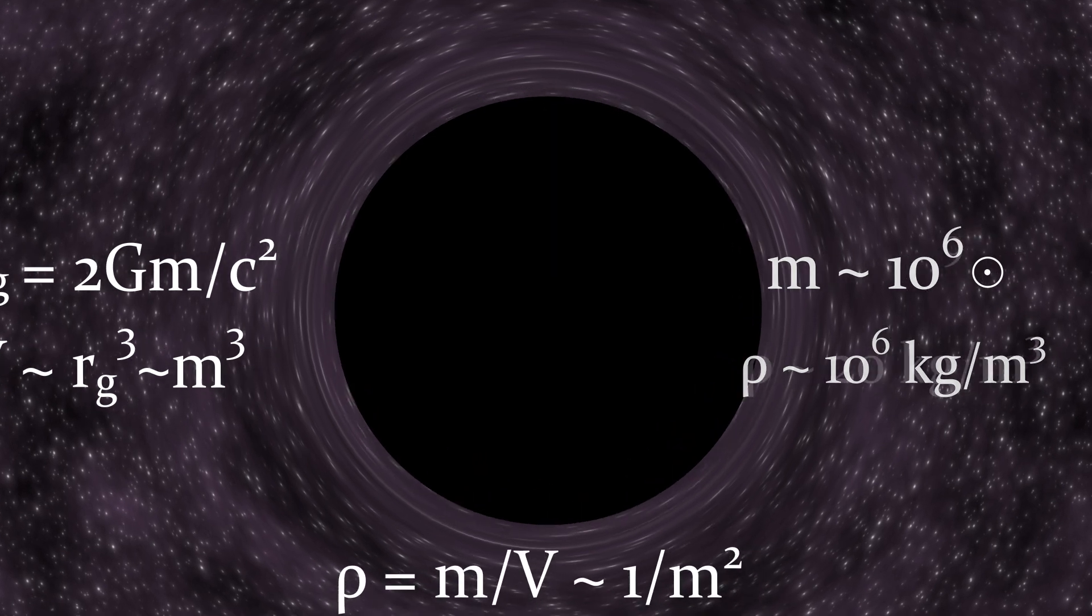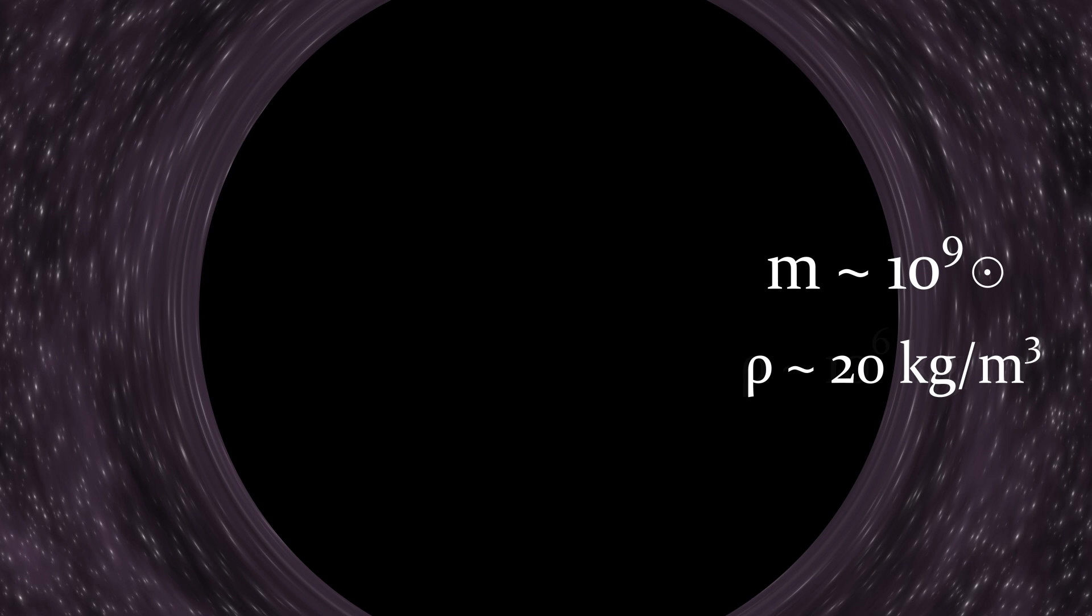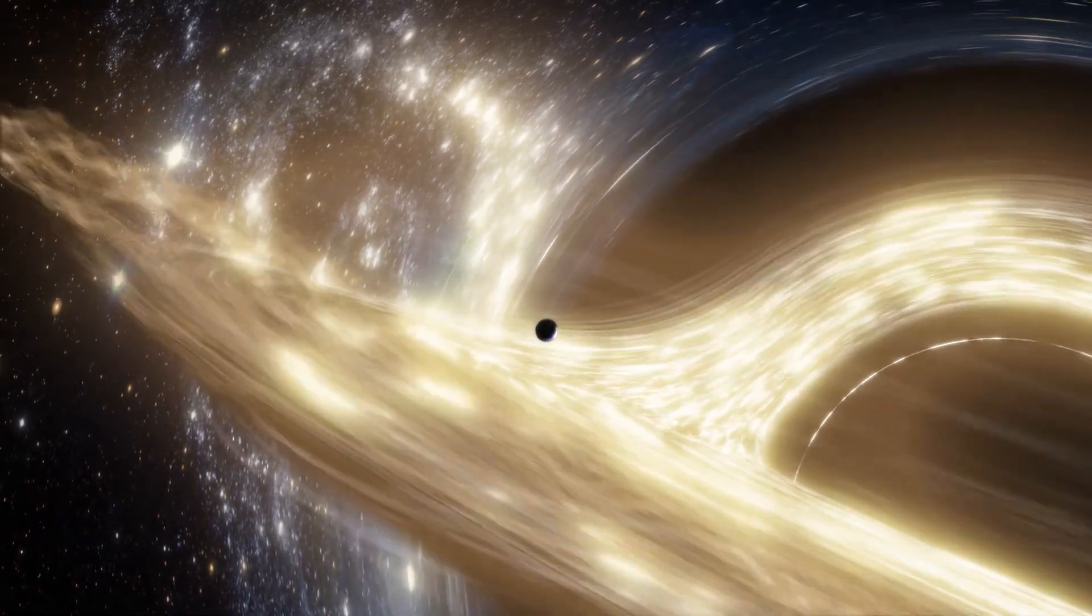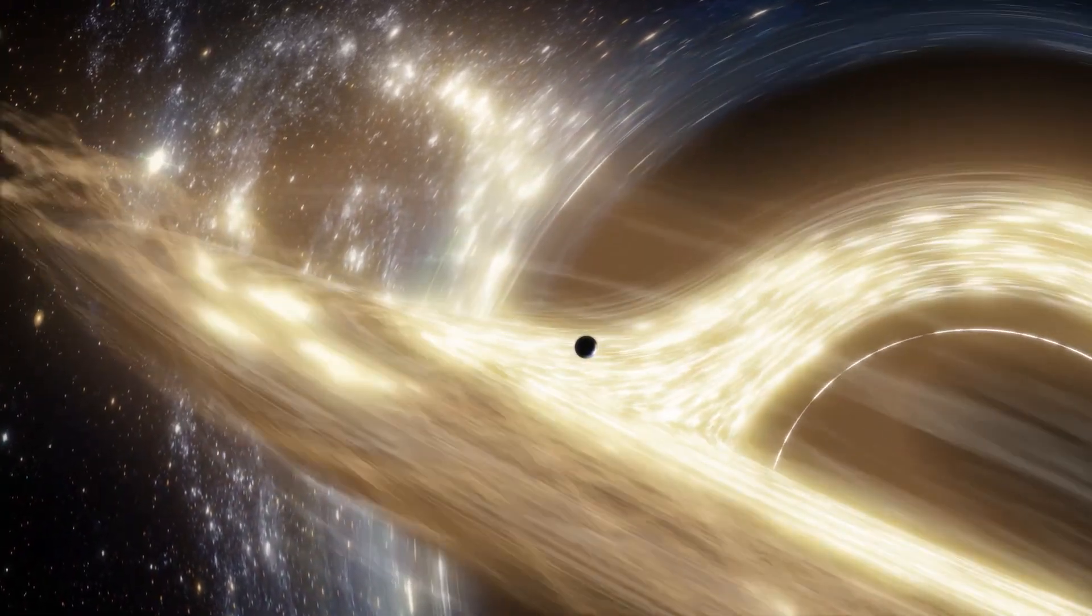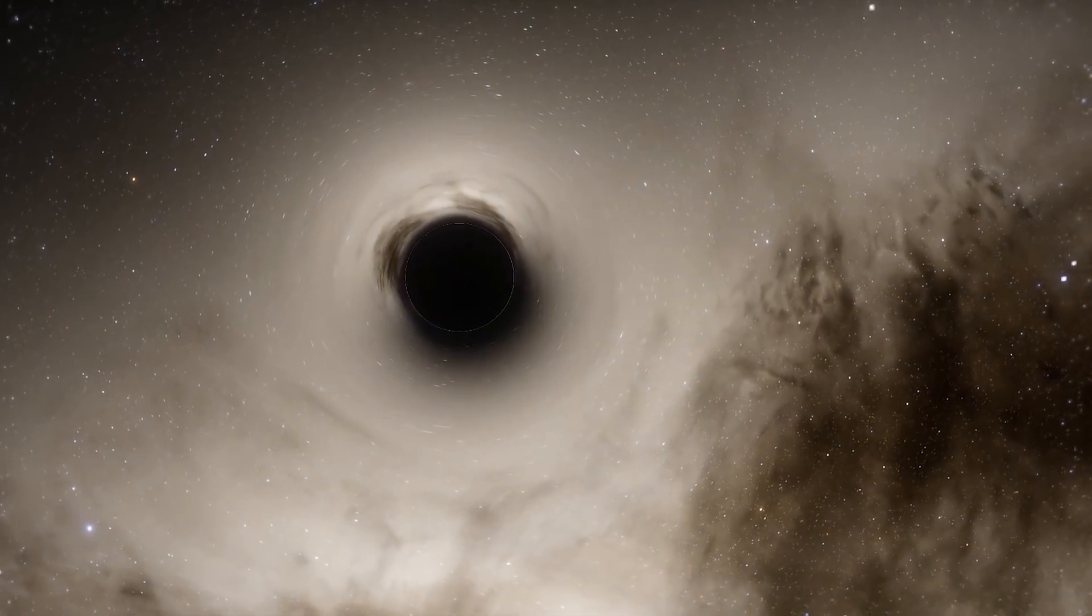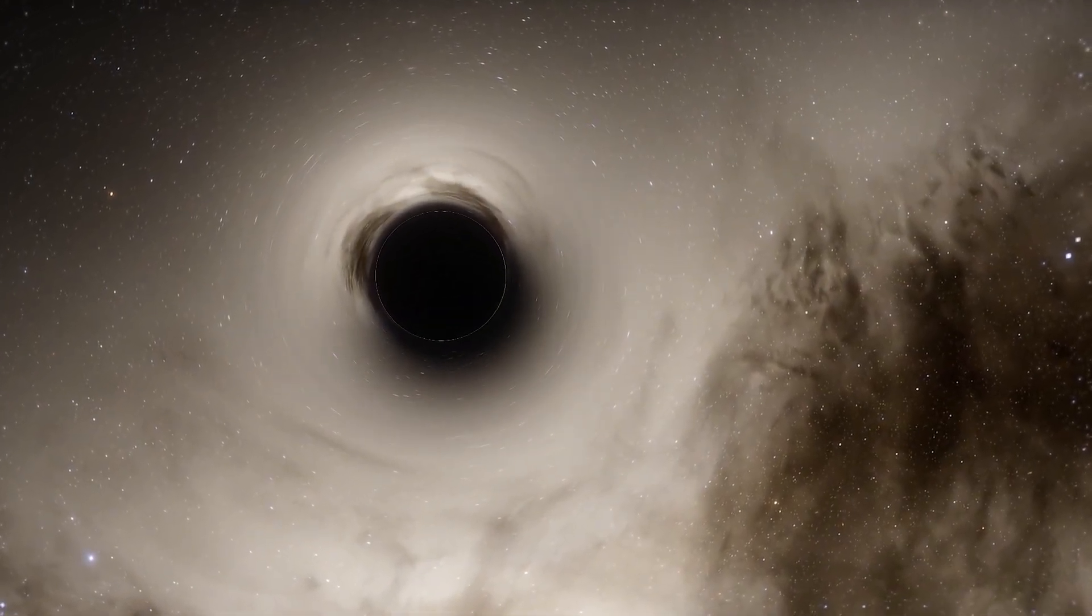For example, black holes with a billion solar masses have densities around 20 kilograms per cubic meter, 50 times less dense than water. The most massive black holes, with masses around 100 billion solar masses, have densities even lower than air. This means that to create a black hole, it's not necessary to compress matter to extreme densities. Simply gathering a significant amount of ordinary matter in a certain region of space will suffice.